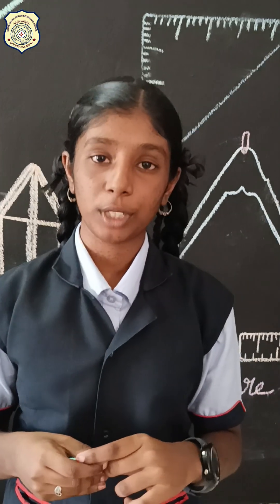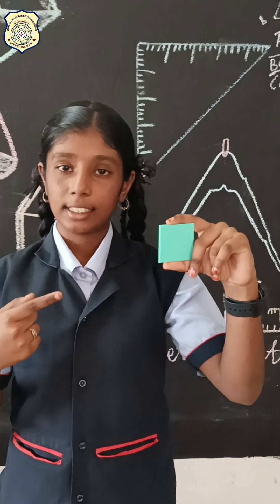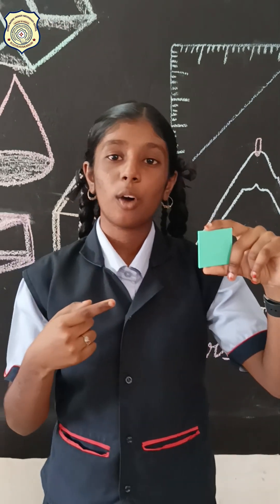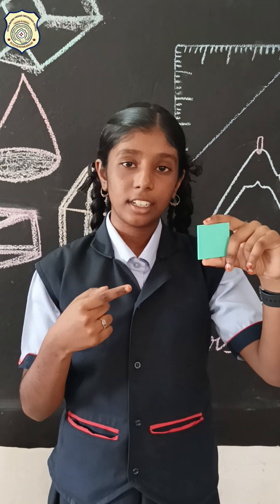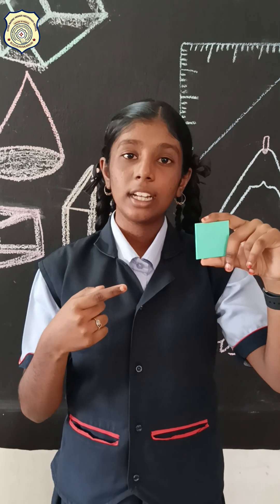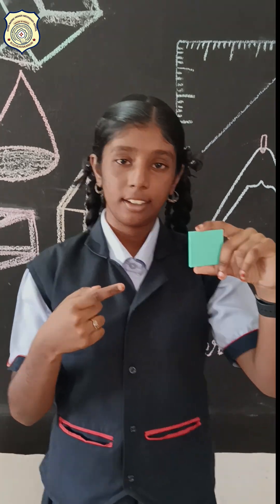Do you know what properties a square has? Square: all sides are equal, all angles are 90 degrees, diagonals are equal, and diagonals bisect at 90 degrees.